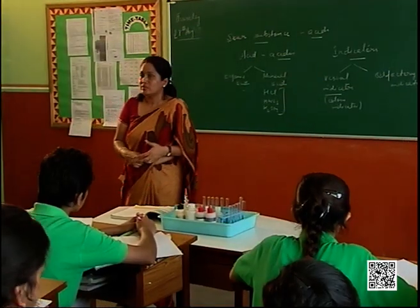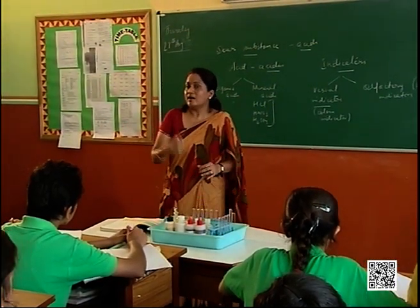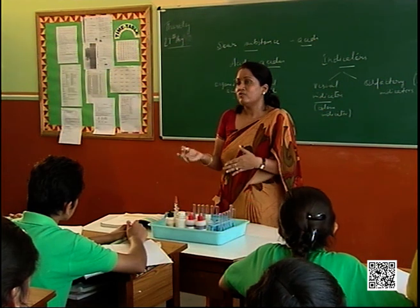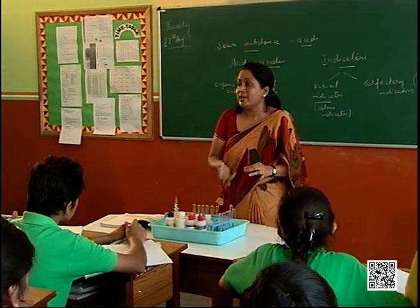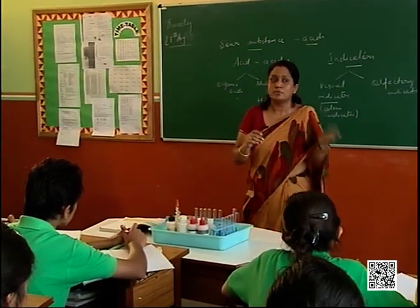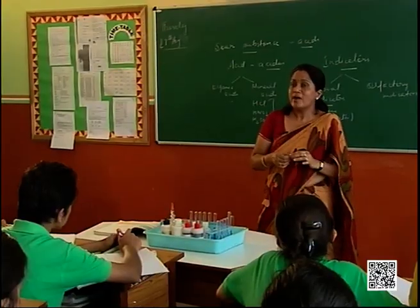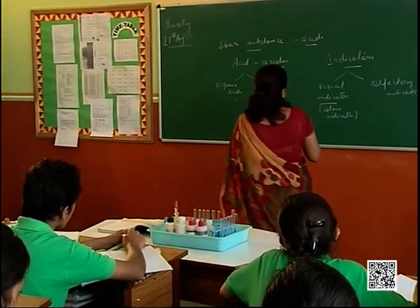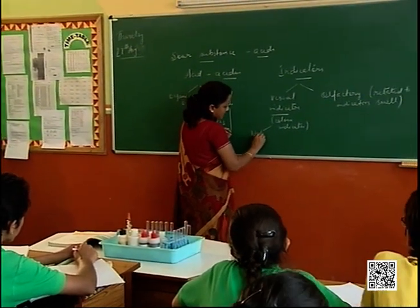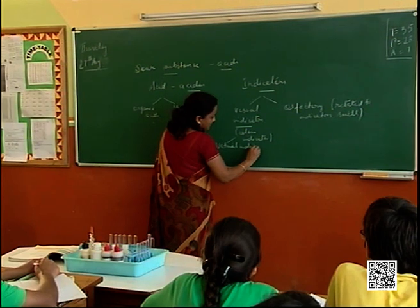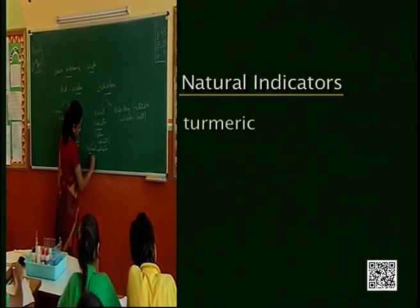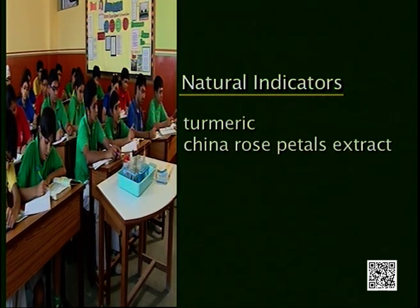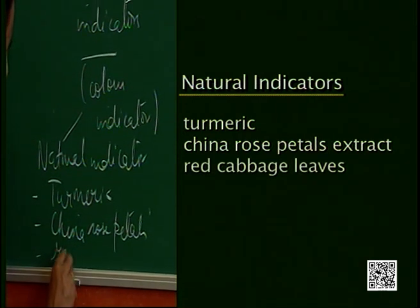These are all natural indicators which we use in everyday life. A very common example: when vegetable dish gravy falls on clothes and we wash those clothes with soap solution, which is a base, the color of that spot changes to reddish brown. Turmeric here has acted as an indicator. So natural visual indicators include turmeric, china rose petals extract, and red cabbage leaves.